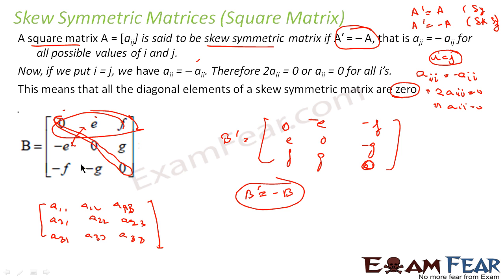f is minus f, g is minus g. If that is the case, it is a skew symmetric matrix. Just by looking at this you can see that - just a shortcut.